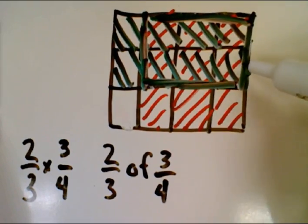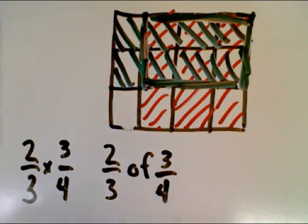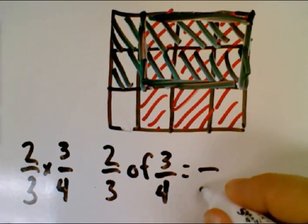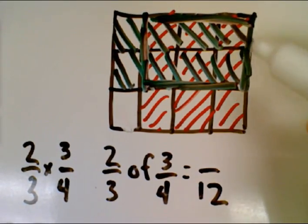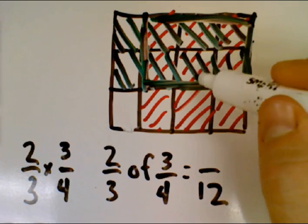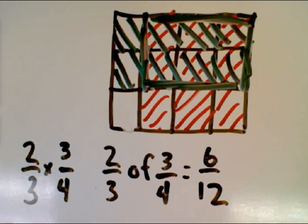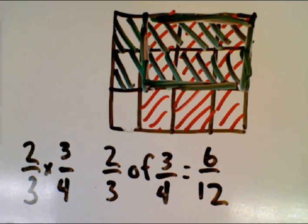We can see now we have a total of 12 equal-sized pieces. So that 12 represents our denominator. And we have one, two, three, four, five, six of them that are shaded by both shaded regions.